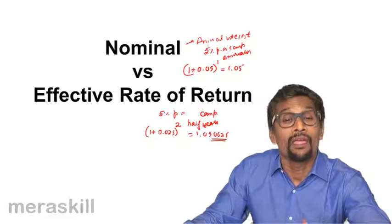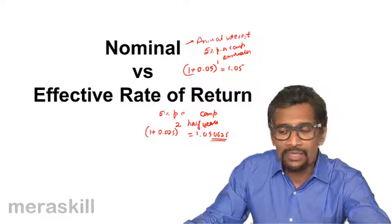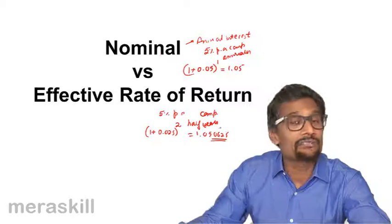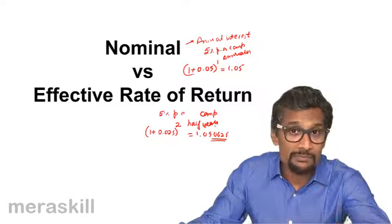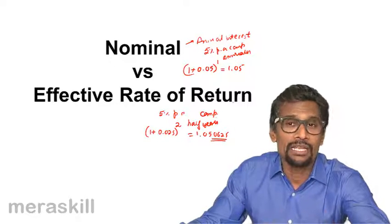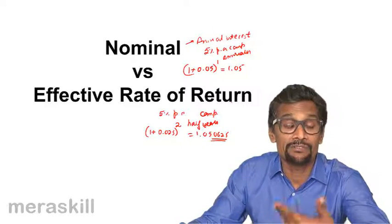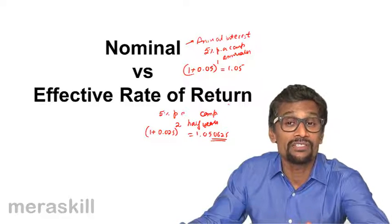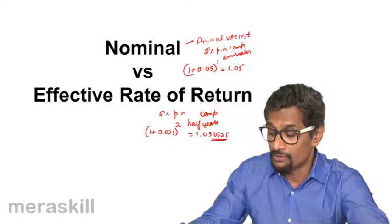As said, if the compounding is done annually, the nominal rate and effective rate are going to be one and the same. But if the compounding takes place half yearly, quarterly, monthly, fortnightly, daily basis, the effective rate of return accordingly changes as compared to the nominal rate of return.